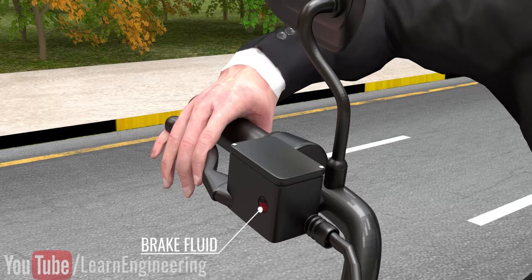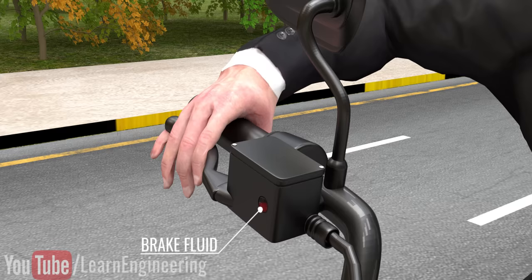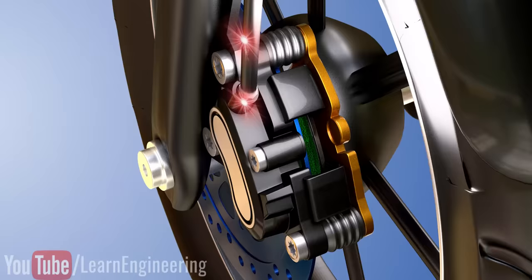When you pull the brake lever, the brake fluid near the lever gets pressurized. Via a brake line, this pressurized fluid connects to the brake pad at the wheel and the brake pads are activated.